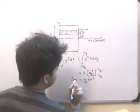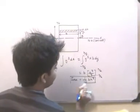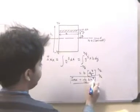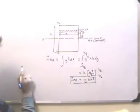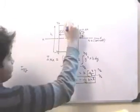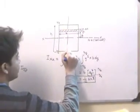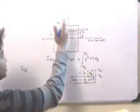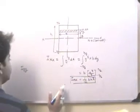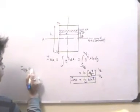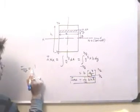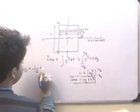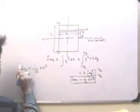If we calculate this, it comes out to be 1/12 BH cubed. So IXX, the moment of inertia of the rectangular cross section with respect to the X axis, is given by 1/12 BH cubed. And IYY, similarly, if we have to find the moment of inertia with respect to the Y axis, it will be equal to 1/12 HB cubed — just the reverse.